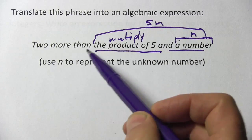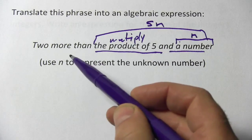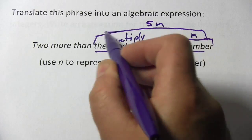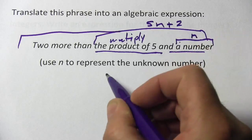And then it says two more than that. Well, to make something be two more than it is, you just add two to it. So this whole thing is five N plus two.